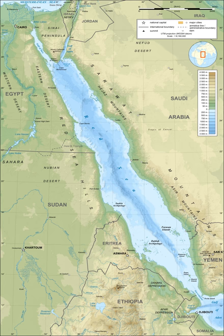The International Hydrographic Organization defines the limits of the Red Sea as follows on the north: the southern limits of the Gulfs of Suez — a line running from Ras Muhammad at 27° 43' to the south point of Shadwan Island and thence westward on a parallel 27° 27' to the coast of Africa — and Aqaba, a line running from Ras al-Fasma southwesterly to Requin Island through Tehran Island.